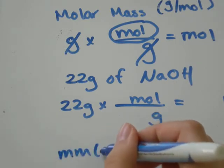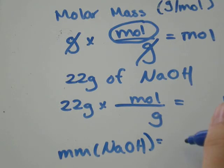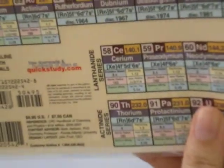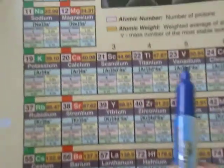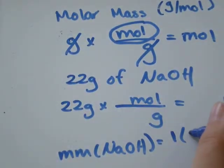So the molar mass of NaOH, well, we've got one molecule, sorry, one atom of sodium. And sodium, we find it on our table, has a molar weight of 23 AMU, or grams per mole, plus we have one oxygen.